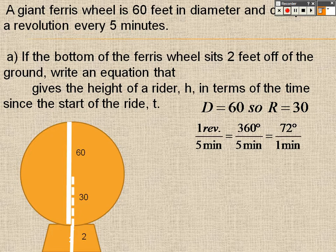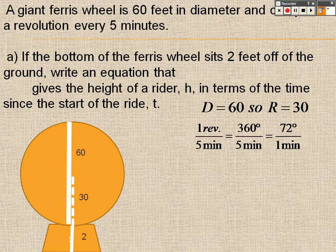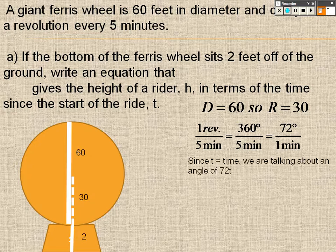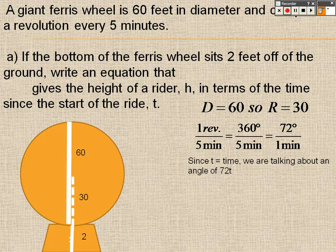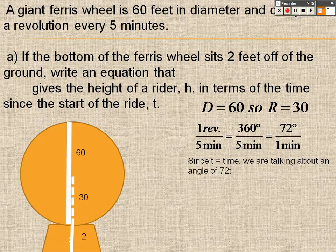So one revolution equals five minutes. One revolution would be the same as 360 degrees. So 360 degrees every five minutes is what it goes. So to figure out how far it goes every minute, I may just divide it so it goes 72 degrees every minute, roughly. And since t equals time, we are talking about an angle of 72t. What that means is the time that it's moving, 72t, that distance that it's going. So it's 72t.